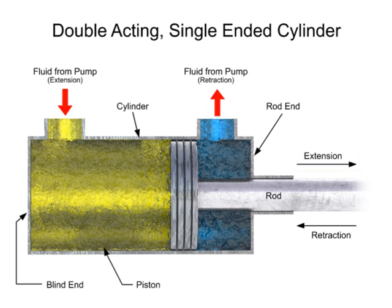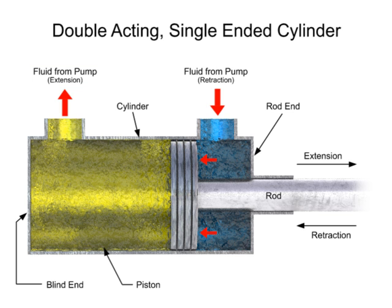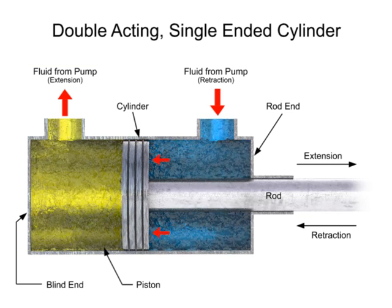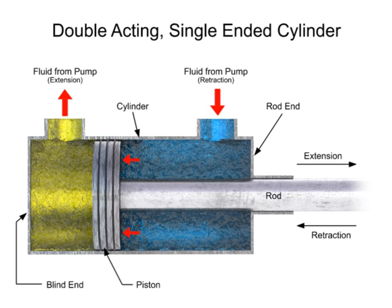When the directional control valve is shifted, it sends fluid into the rod end port, out of the blind end port, and back to the tank. Pressure builds up and generates a force on the other side of the piston, causing the retraction stroke.